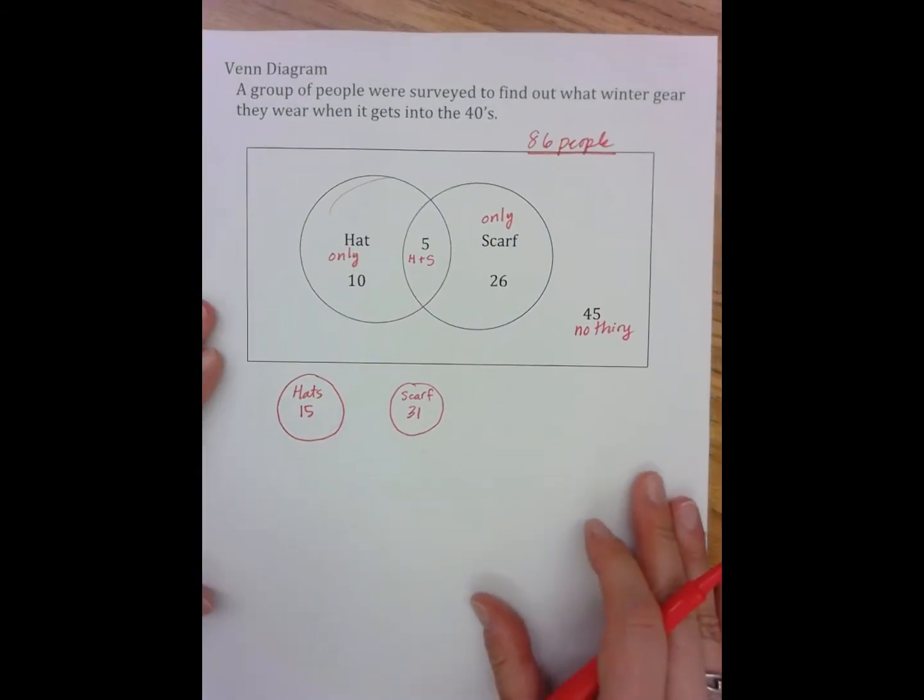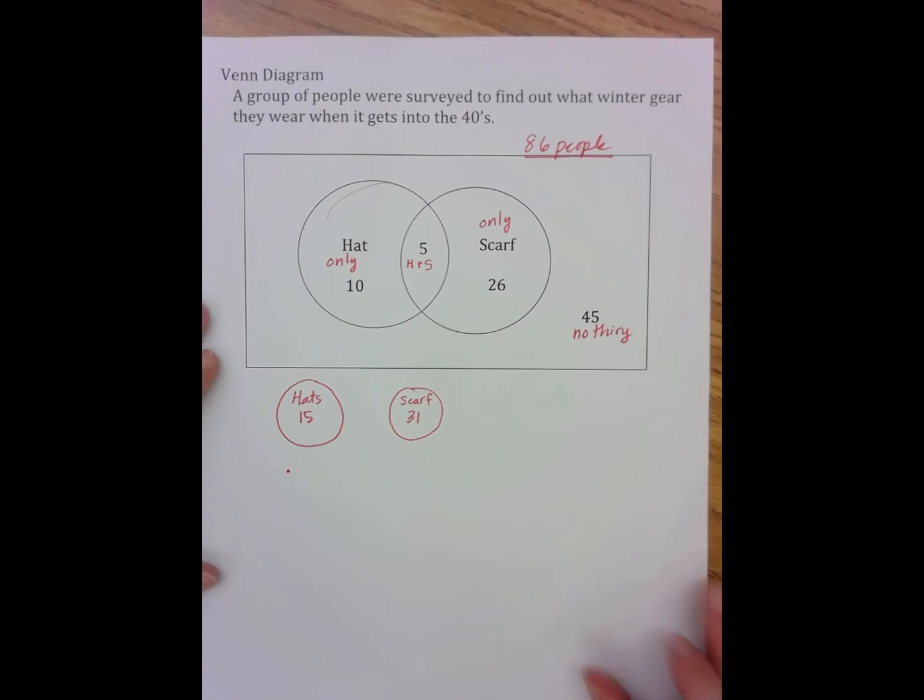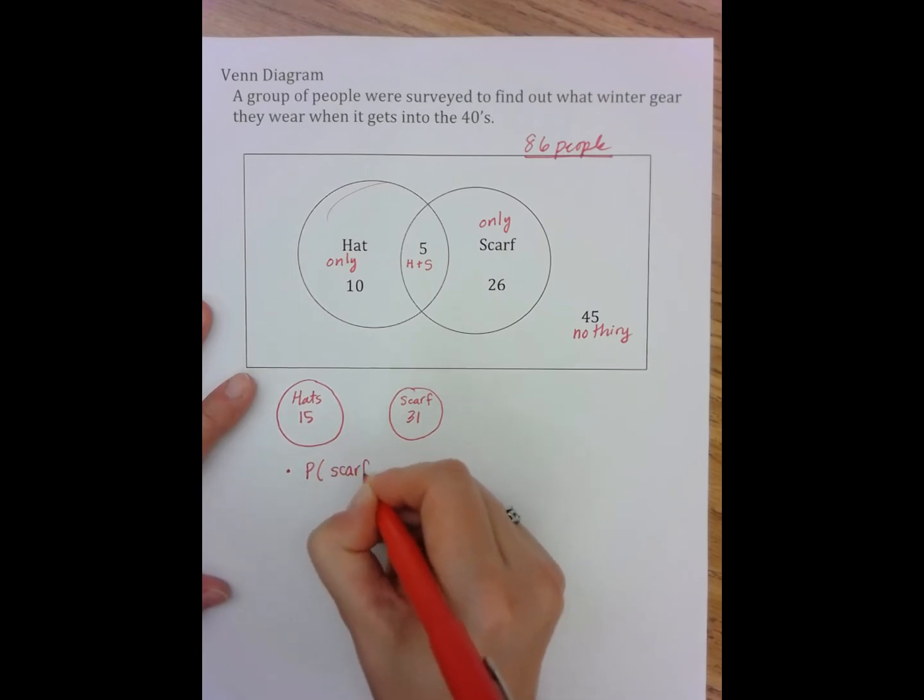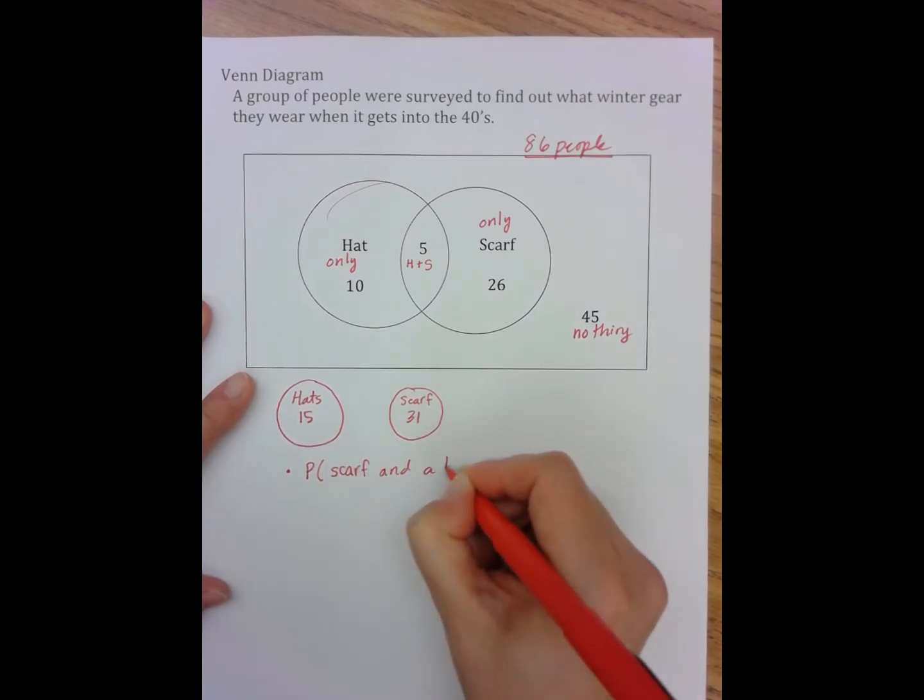So let's see what the probability. Sorry about that, a little glitch in technology. There we go. What is the probability that a person wears a scarf and a hat?